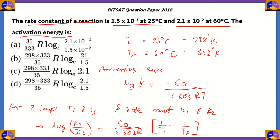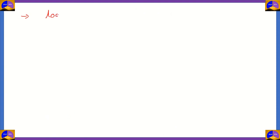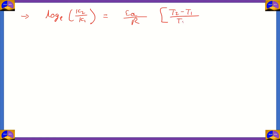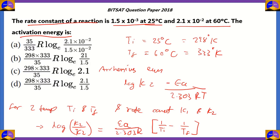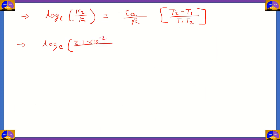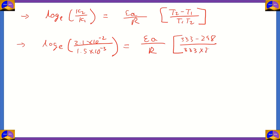In the options, 2.303 is not mentioned, so we use the natural log form. Substituting values: k₂ = 2.1×10⁻², k₁ = 1.5×10⁻³. The 10⁻² and 10⁻³ combine to give a factor of 10, so the left side becomes ln(21/1.5). On the right: Ea/R × (333−298)/(333×298) = Ea/R × 35/(333×298).